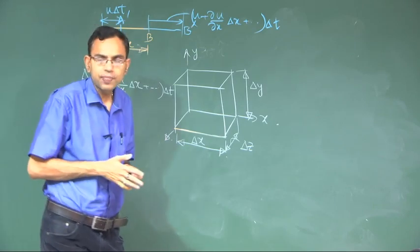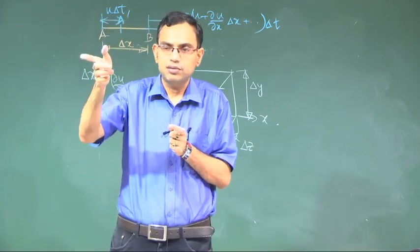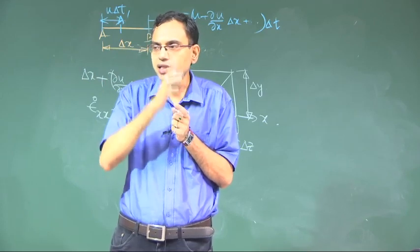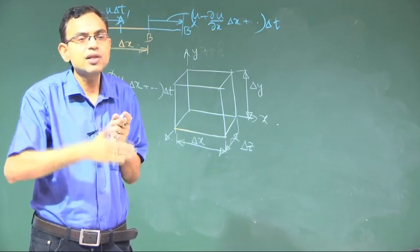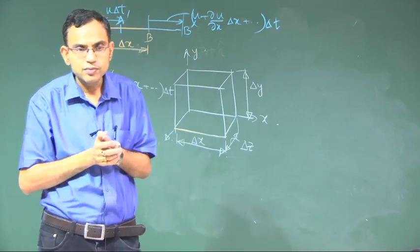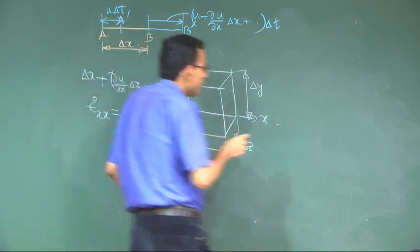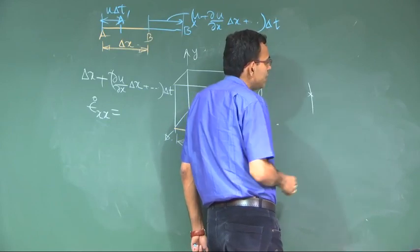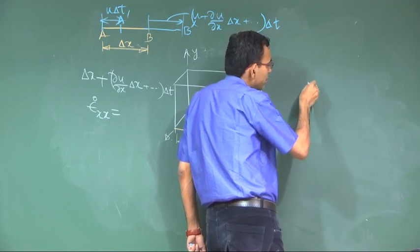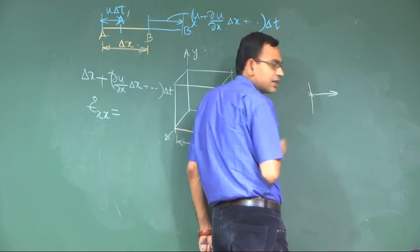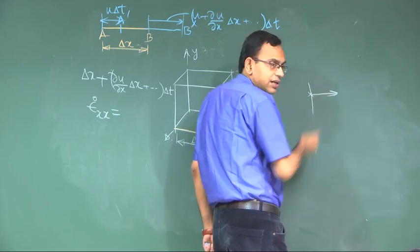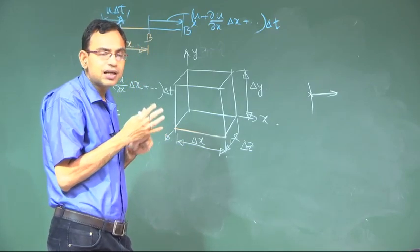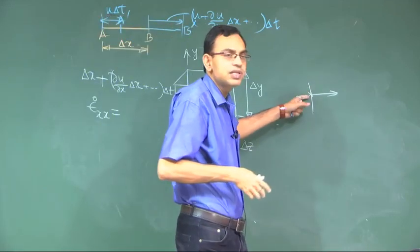Why are two indices necessary? One index describes the direction of the stress or strain, and another specifies the normal direction of the plane used as a reference to calculate the stress or strain. For example, to calculate stress at a point, you calculate force per unit area. To calculate the force you imagine an area, and there is a normal direction to that area, but there is also a direction of the force.